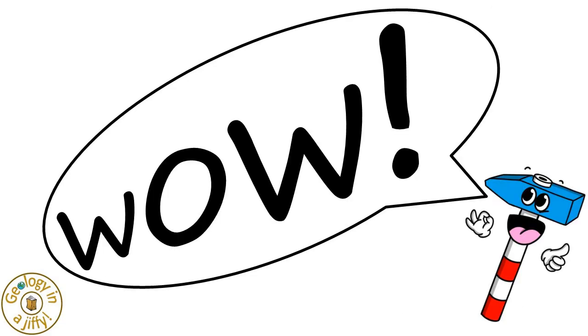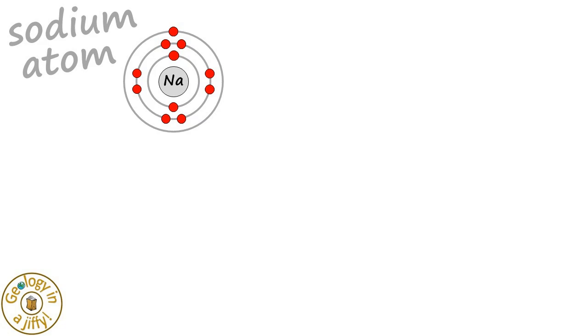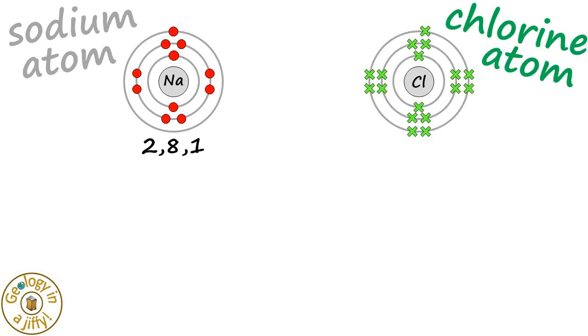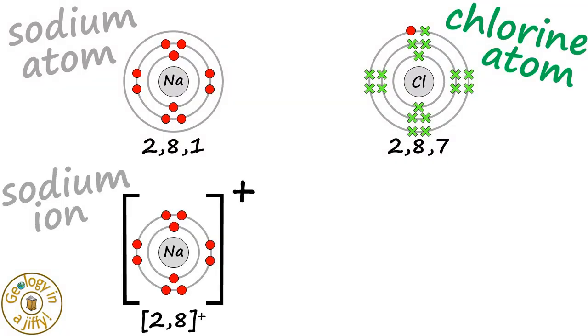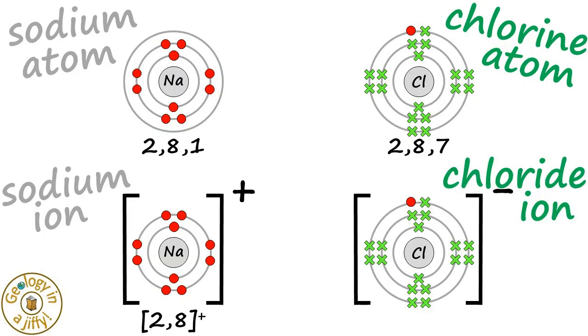Wow! So we had our sodium atom with configuration 2, 8, 1 and our chlorine atom with configuration 2, 8, 7. The sodium atom wanted to lose an electron and the chlorine atom needed to gain an electron. So the electron moved from the sodium atom to the chlorine atom, making a sodium ion and a chloride ion. That's amazing!